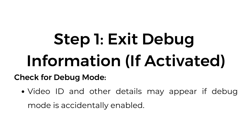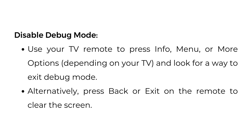Step 1: Exit debug information, if activated. Check for debug mode — video ID and other details may appear if debug mode is accidentally enabled. To disable debug mode, use your TV remote to press Info, Menu, or More Options, depending on your TV, and look for a way to exit debug mode. Alternatively, press Back or Exit on the remote to clear the screen.